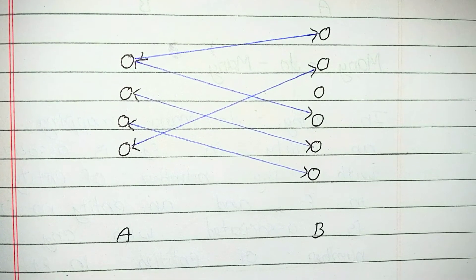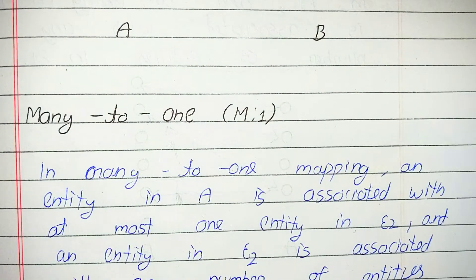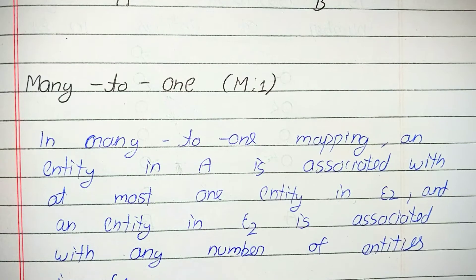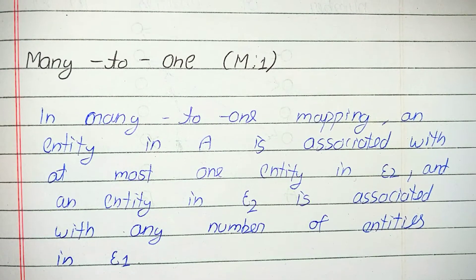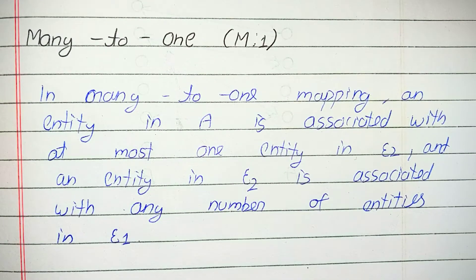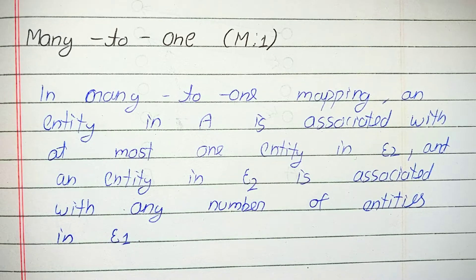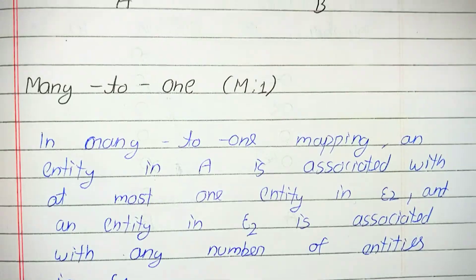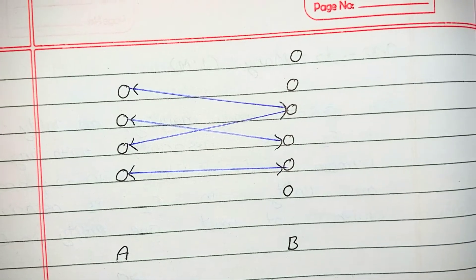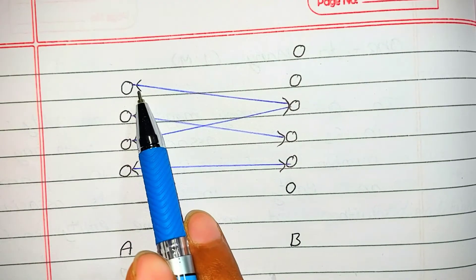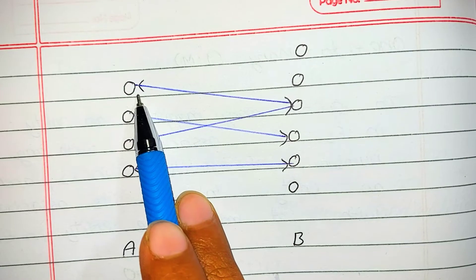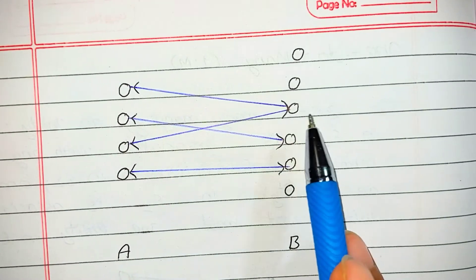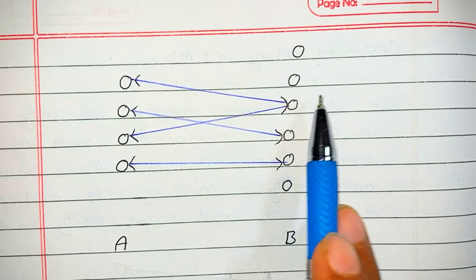The third one is many to one. In many to one mapping, an entity in A is associated with at most one entity in E2, and an entity in E2 is associated with any number of entities in E1. Here is the diagram — Entity A and Entity B. This is connected to this, and this entity is connected to another entity.